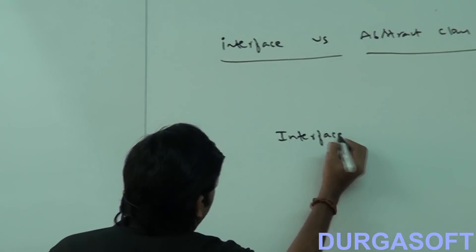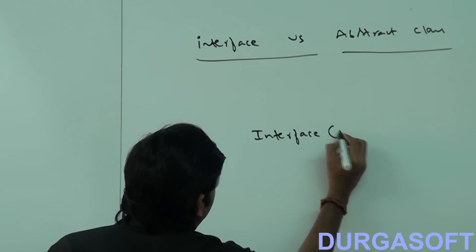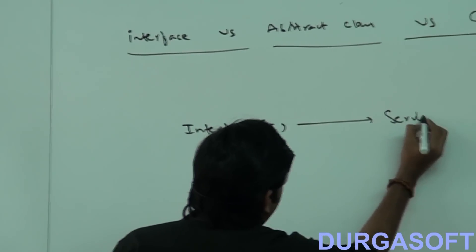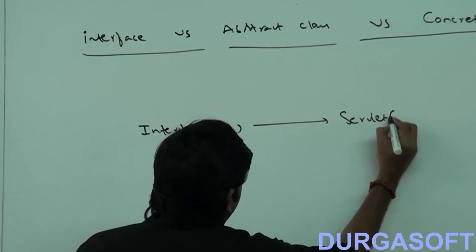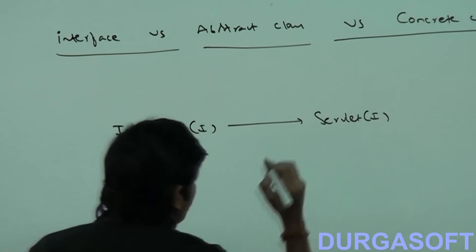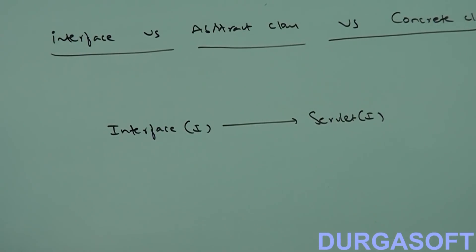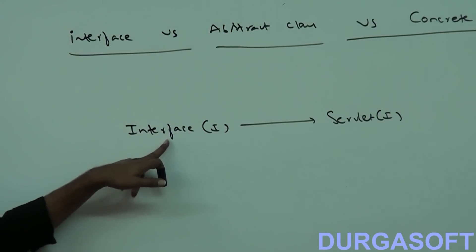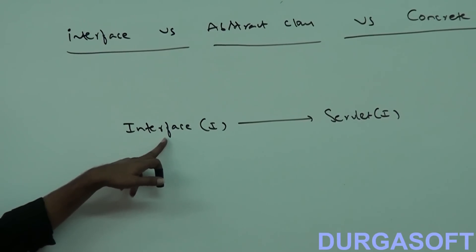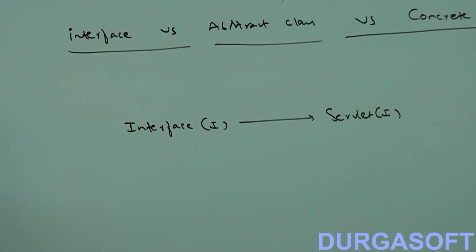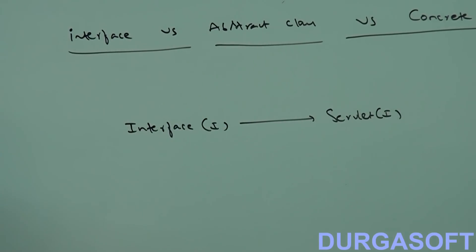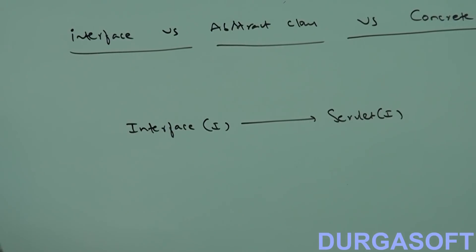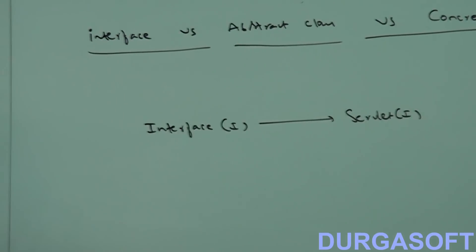The best example for the interface concept is Servlet. Servlet itself is an interface. If we don't know anything about implementation and just have a requirement specification, 100% abstraction means we should go for the interface concept.